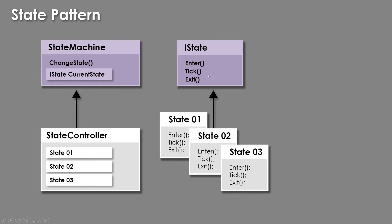In order to be an IState, it needs to implement an enter, exit, and tick — where tick you can think of as the update method inside Unity, running every single game loop. Our state machine base class will handle changing state and will keep track of whatever the current IState is. This will be the same no matter what state machine we have. On top of this, we're going to have our concrete implementations.